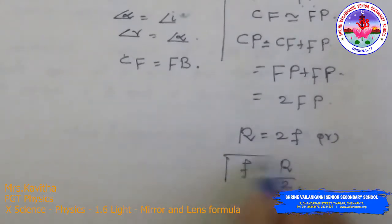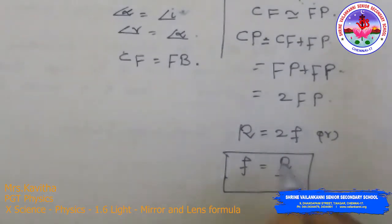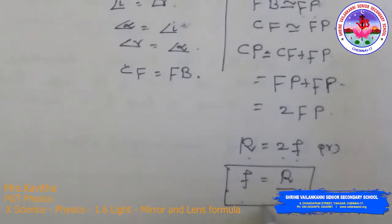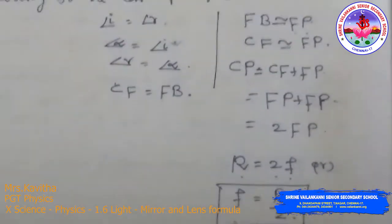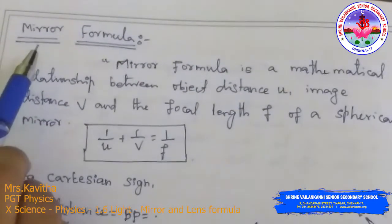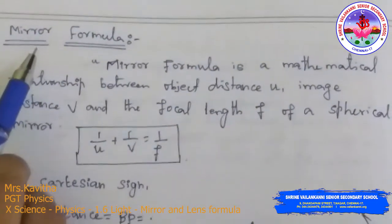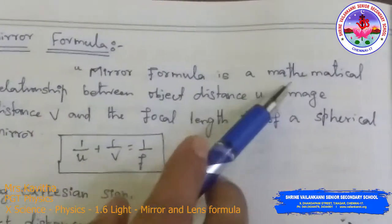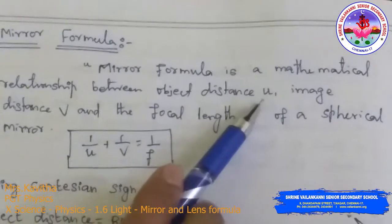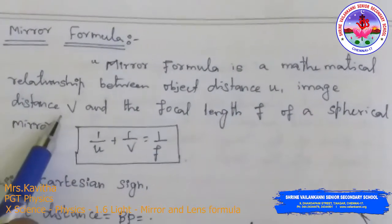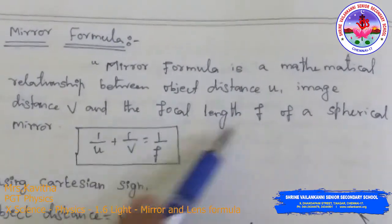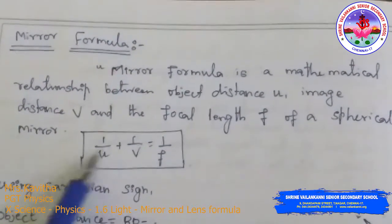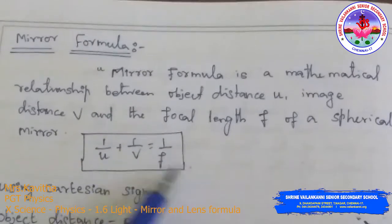The radius of curvature is 2 times the focal length. Now for the mirror formula — the mathematical relation between the object distance U, image distance V, and the focal length F of a spherical mirror — we know that 1/U + 1/V = 1/F.